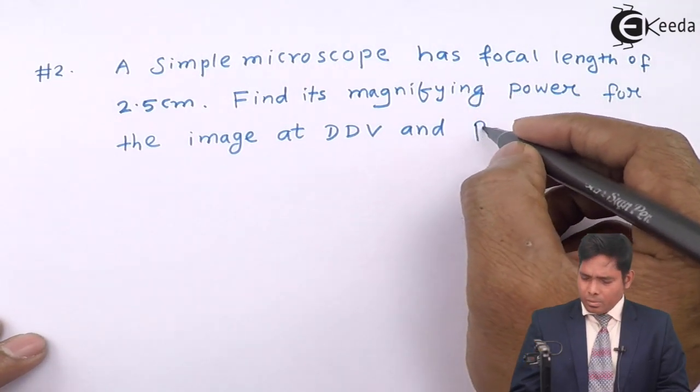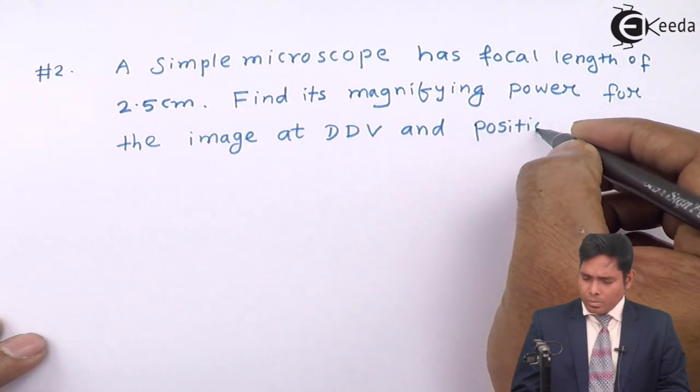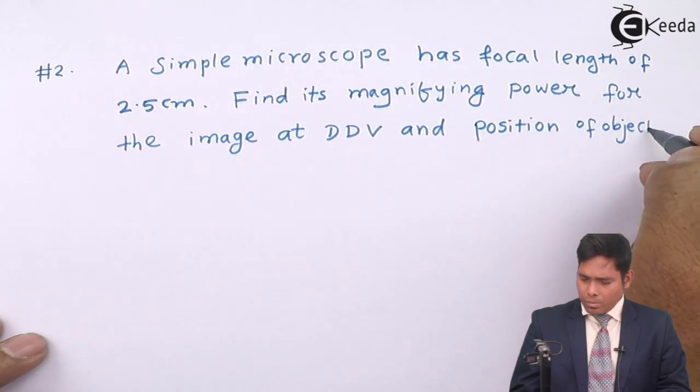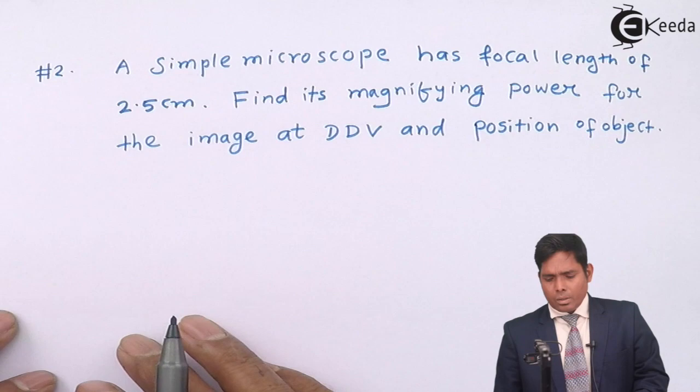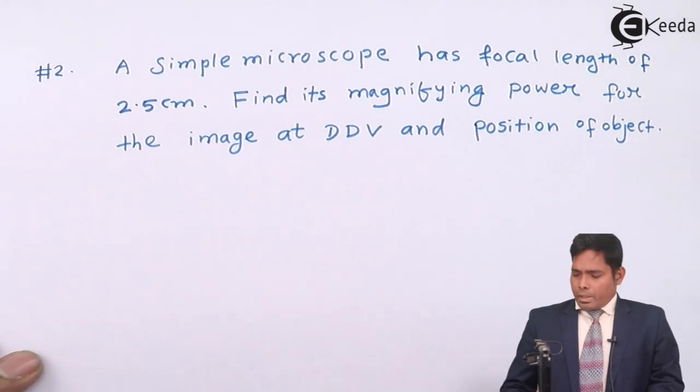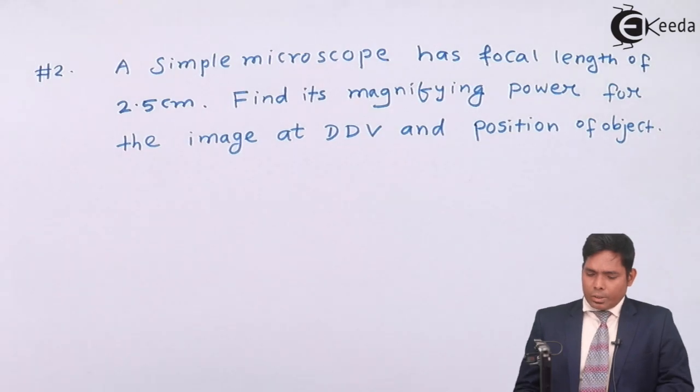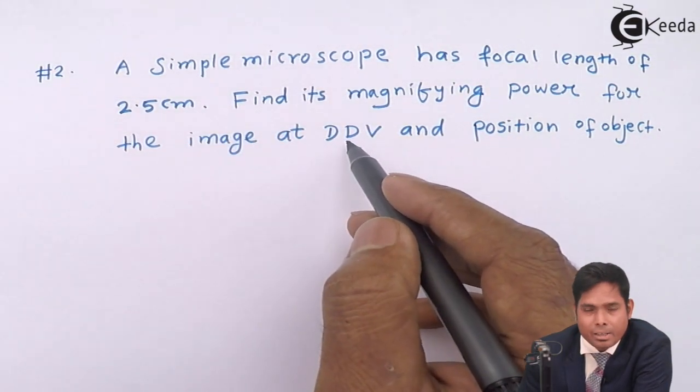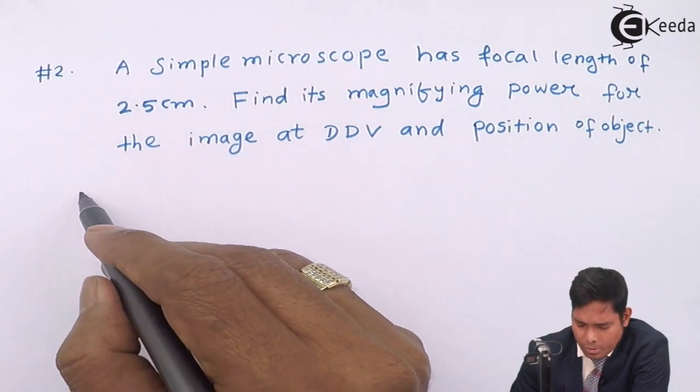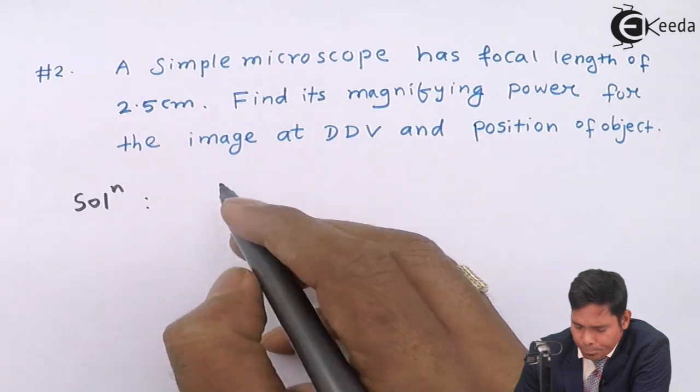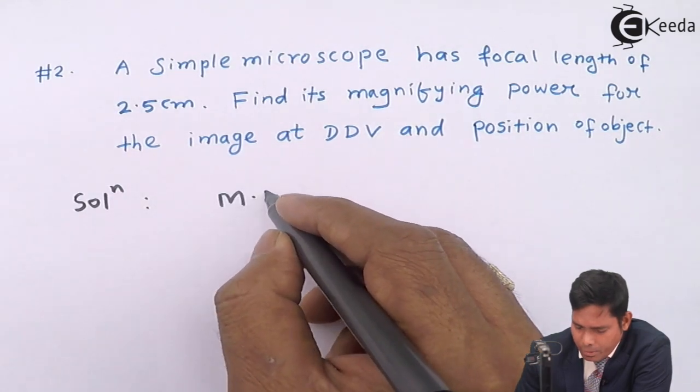Position of object. Okay. We will continue this. A simple microscope has a focal length of 2.5 cm and find the magnifying power with image at DDV. This is exactly similar to the last part of the question. So, first we will solve this, find the magnifying power.